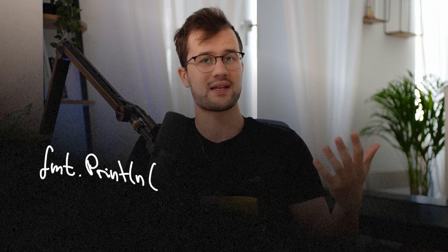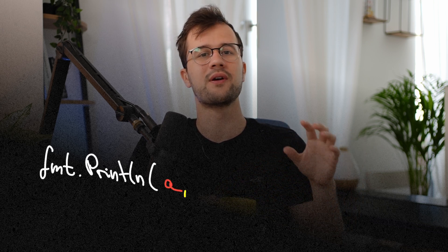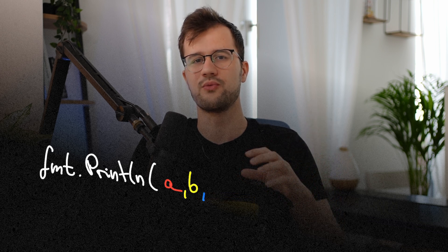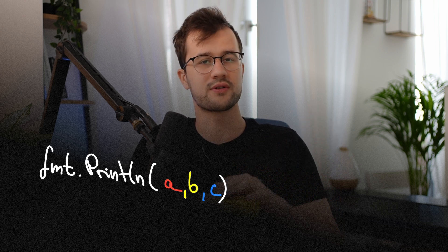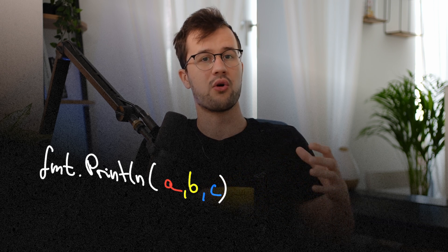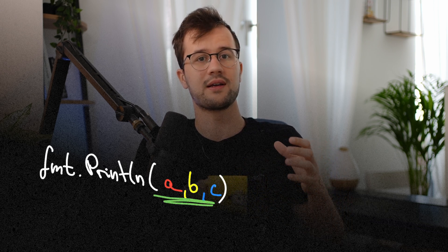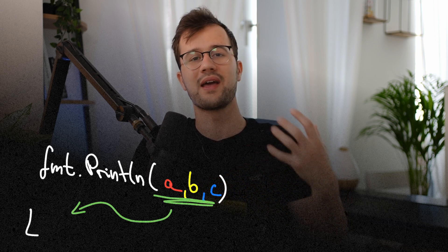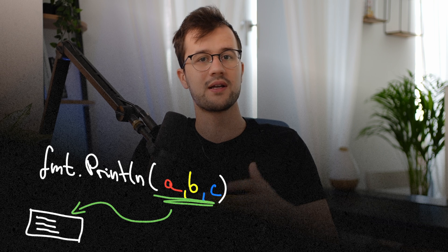A really popular variadic function is the fmt.println function, where you can insert all sorts of arguments you want into this function. So you concatenate the arguments into one sort of list in the function call and then these arguments are printed to the console.